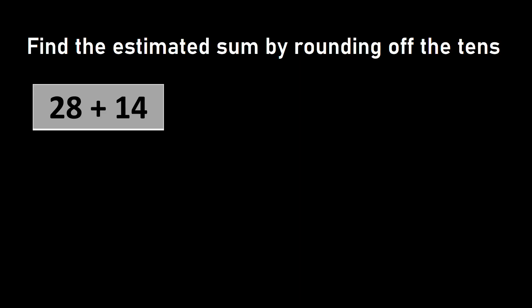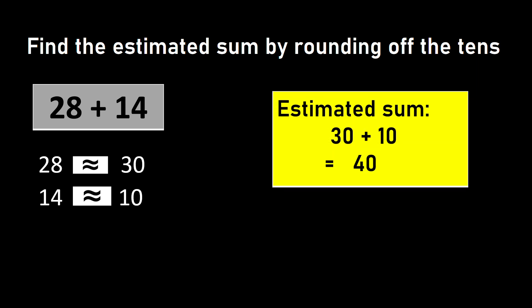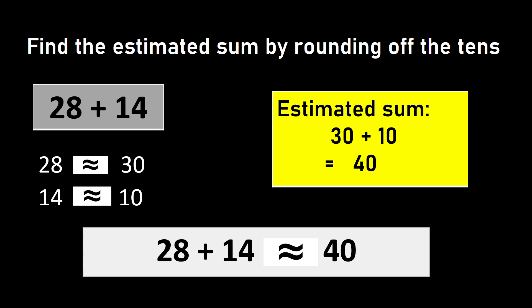Let us start with two-digit numbers. Here I have a two-digit addition: 28 plus 14. Here 28 is rounded up to 30 — that is, 28 is approximately equal to 30. And 14 is rounded down to 10. So the estimated sum is 30 plus 10, which is equal to 40. Hence we say the sum of 28 plus 14 is approximately equal to 40.